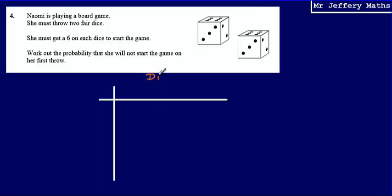I'm going to label across the top dice one. What could happen on dice one? Well, I could get a one, a two, a three, a four, a five, or a six.